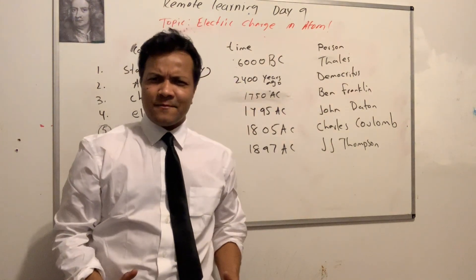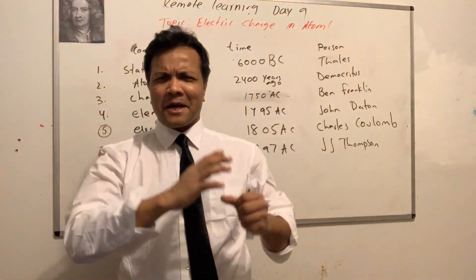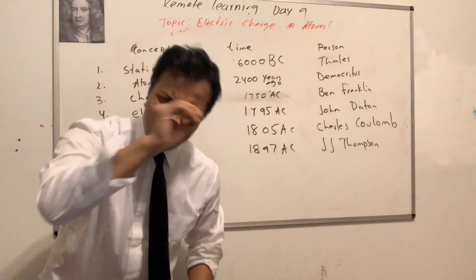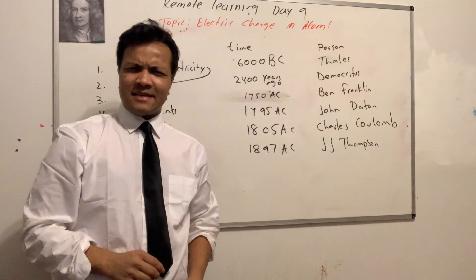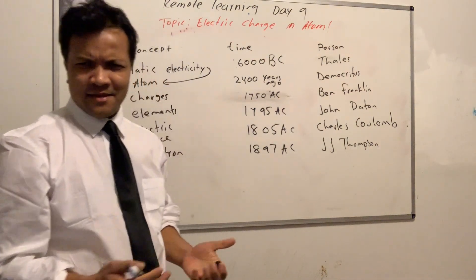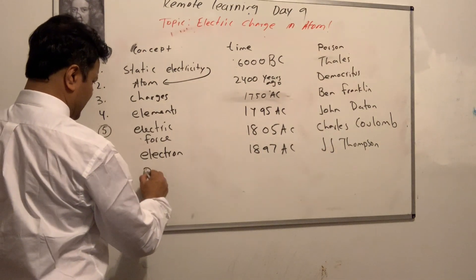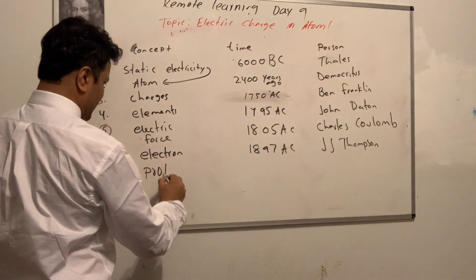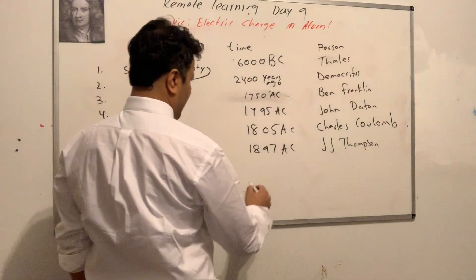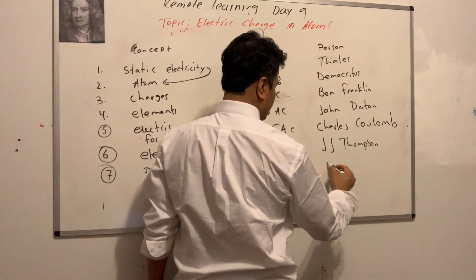The next thing is Rutherford. Rutherford said not only is the atom not the end of history, not even the electron is the end of history. There is something inside the atom, and he called it, of course, the proton. That was in 1912, and the name is Ernest Rutherford — he discovered it.